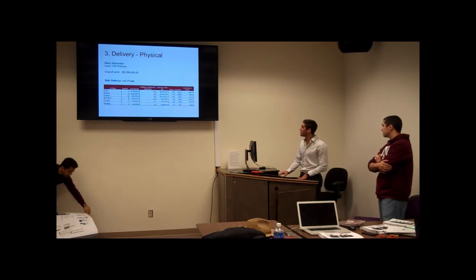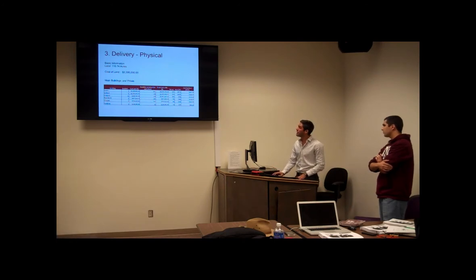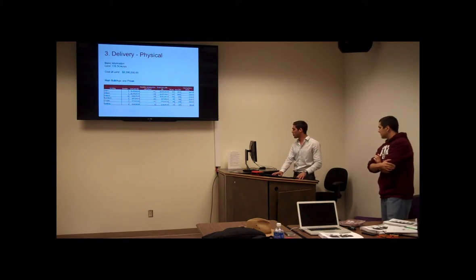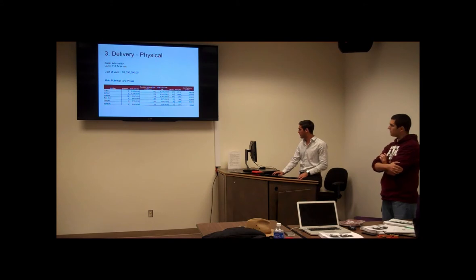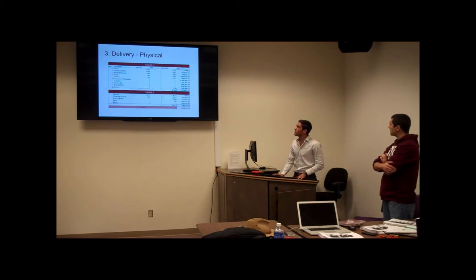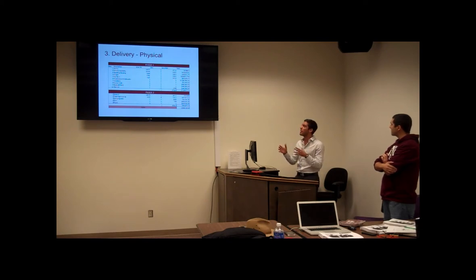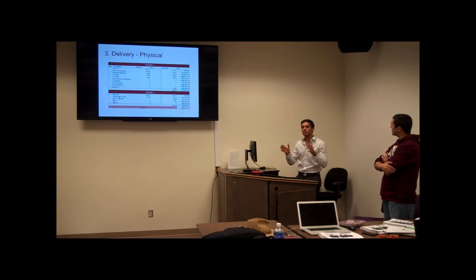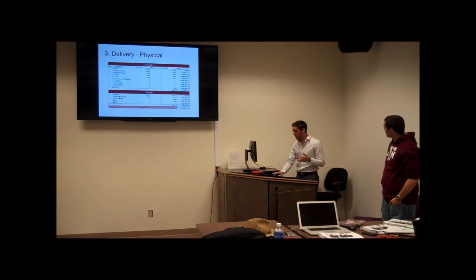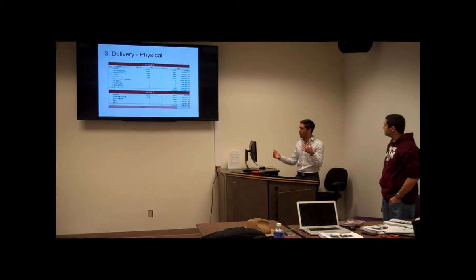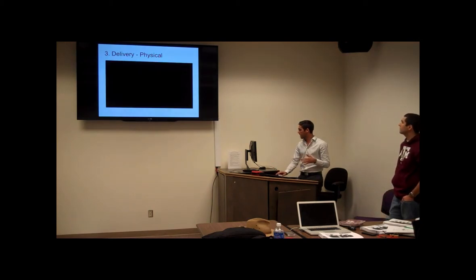The land is 116 acres, roughly valued at two million four hundred thousand dollars. Here are the costs per square foot and total costs for the most important buildings. We have two phases, each three years long. In phase one, we want the complete project operational, because once it's working we can use events — like those on the soccer and sports fields — for fundraising to fund phase two.